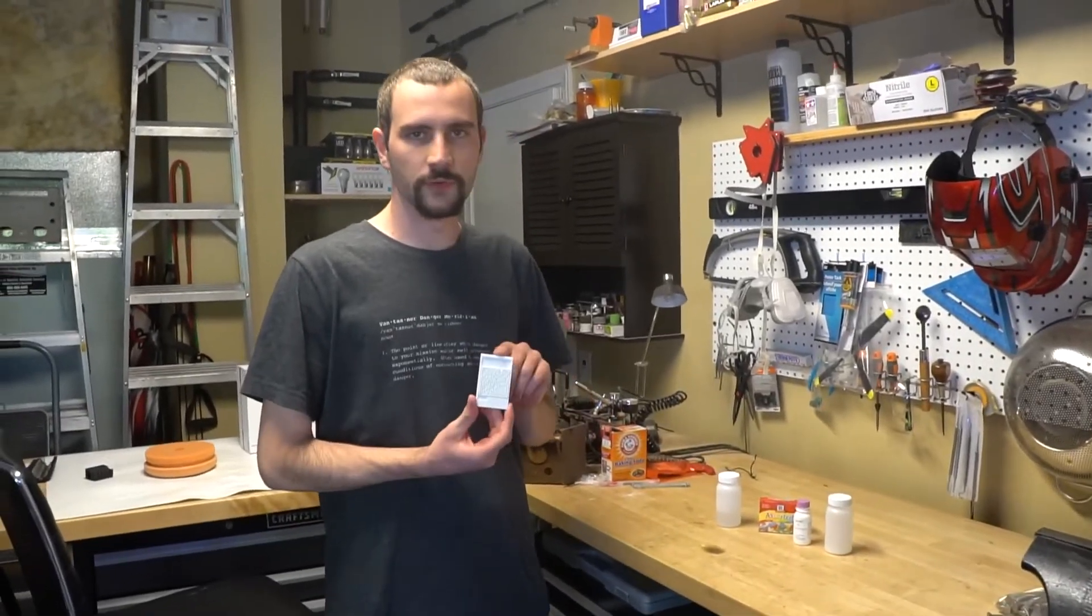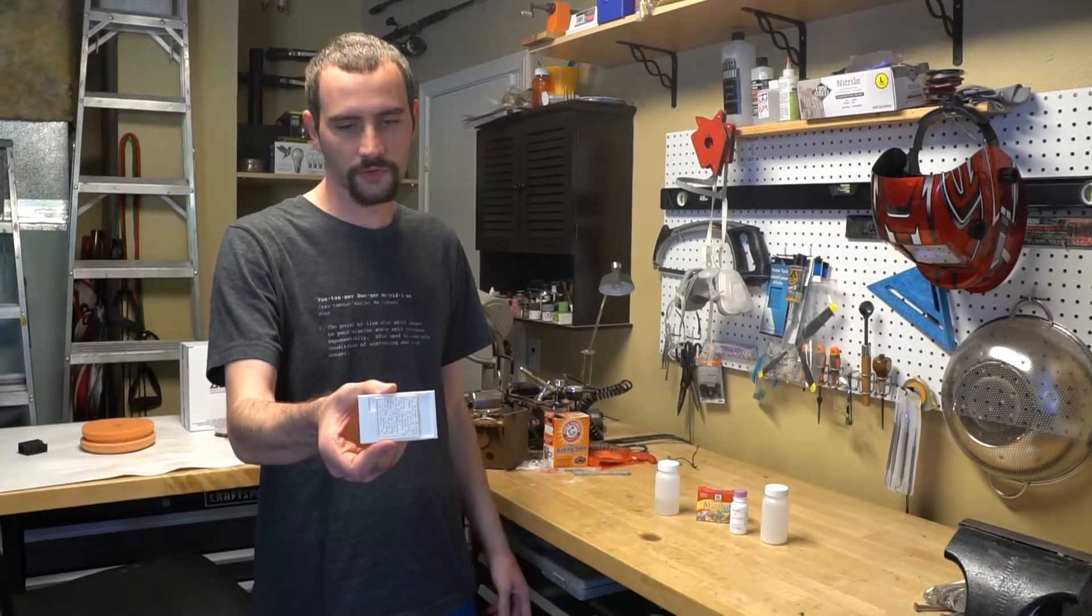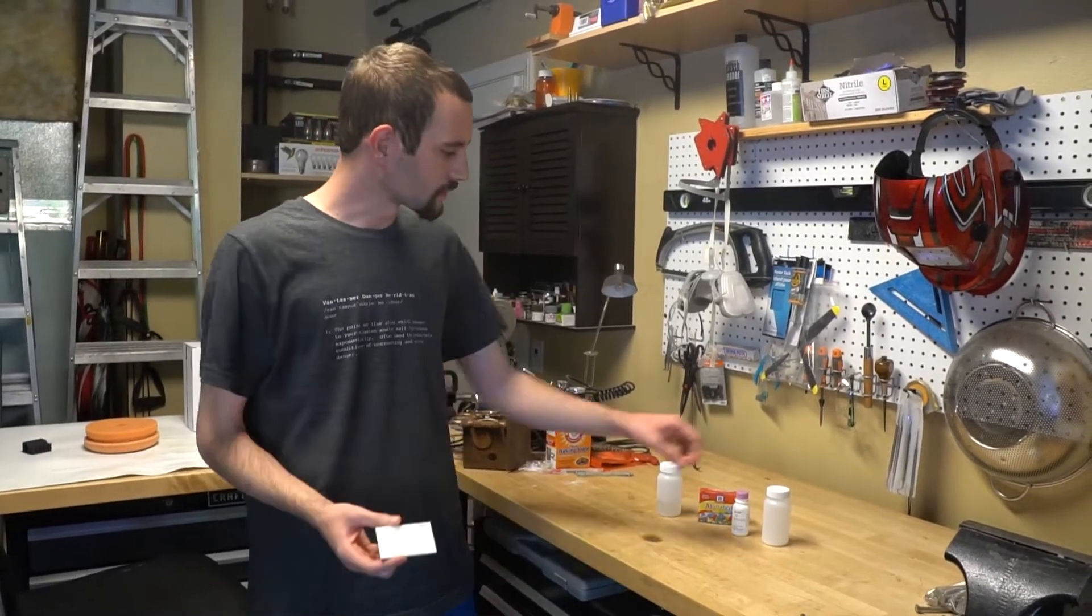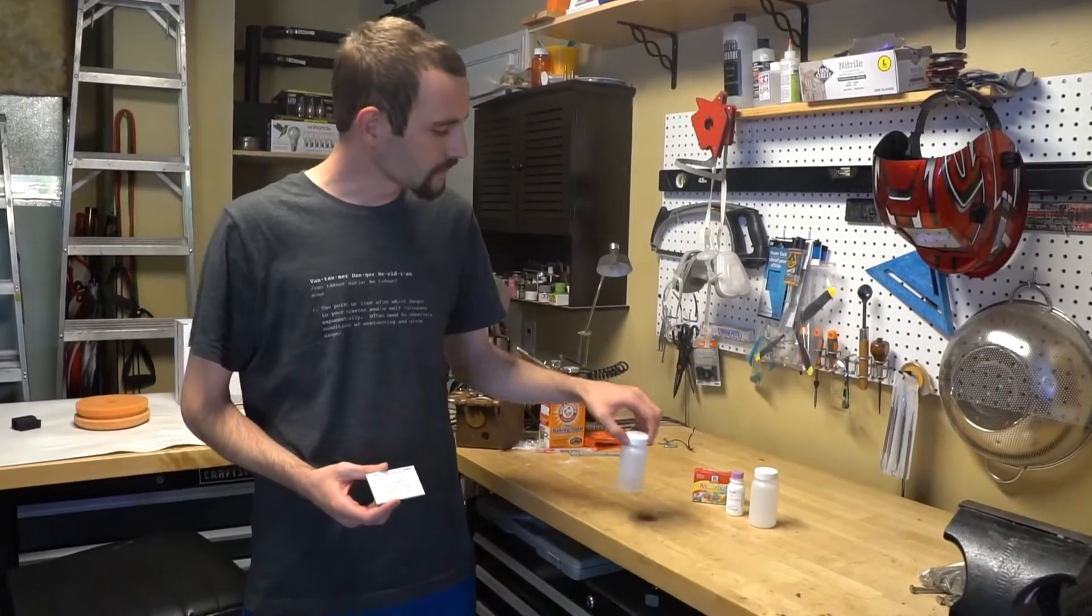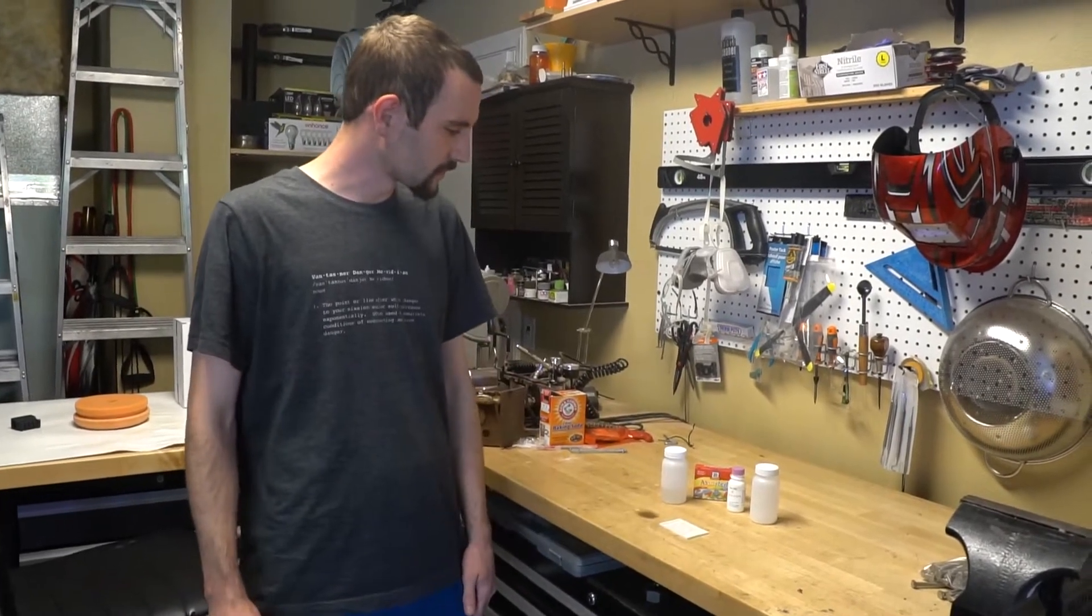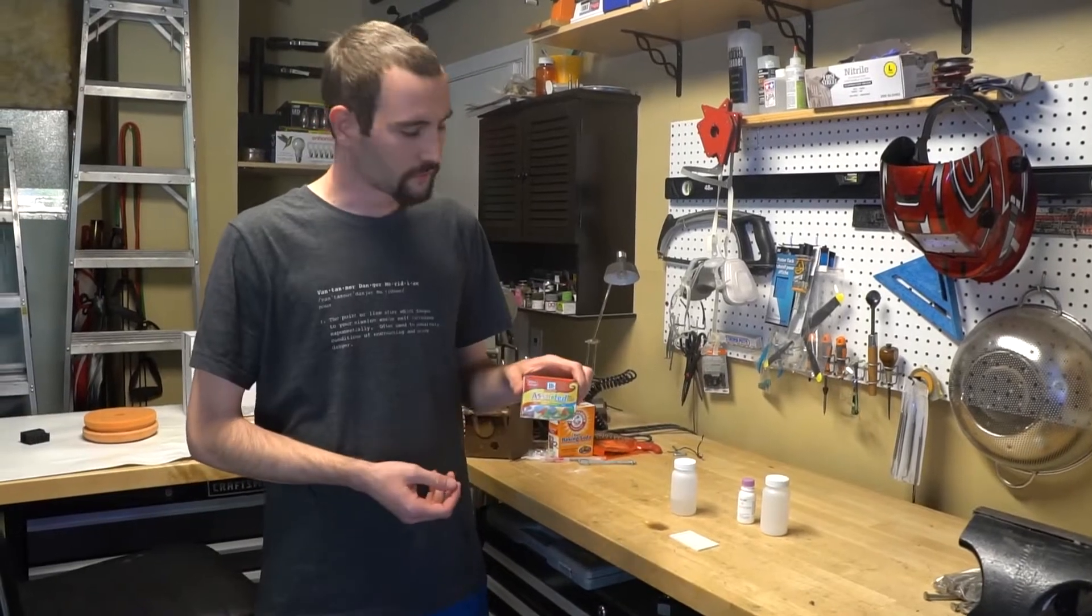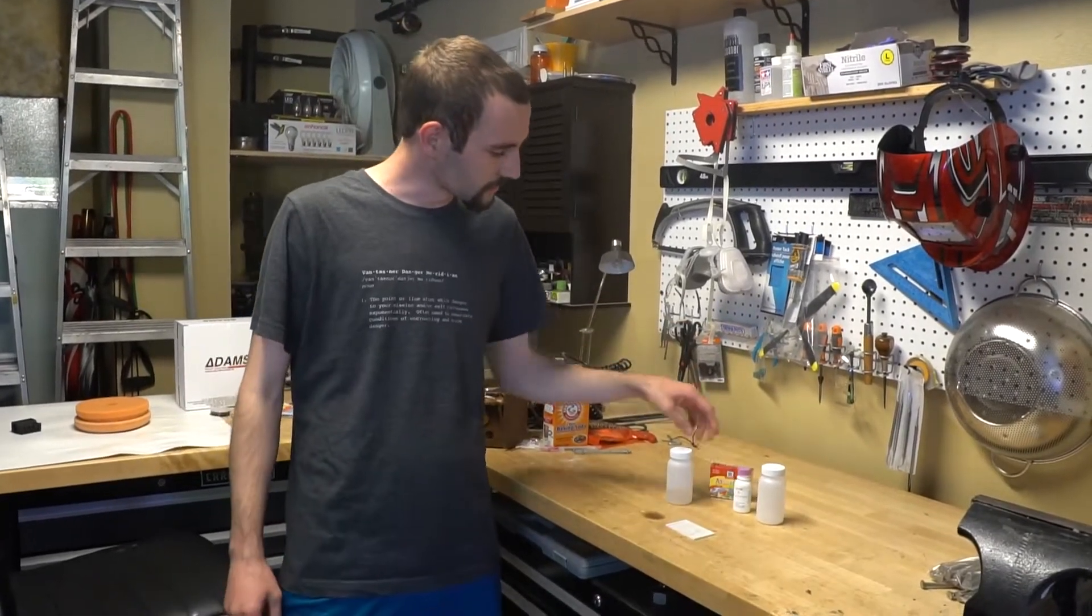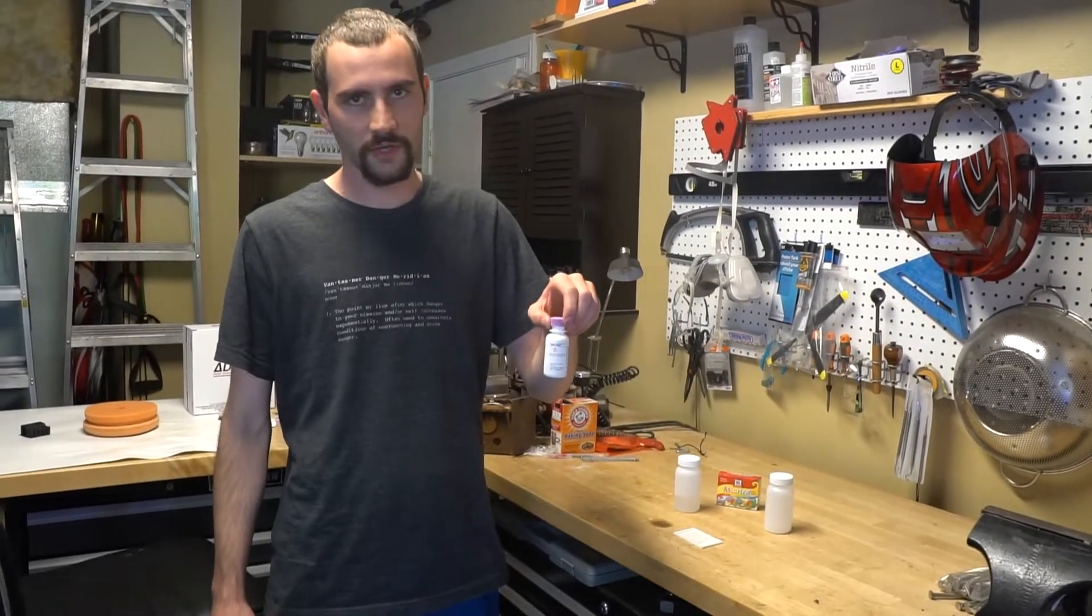So here's our 3D printed maze that we're going to be using for the experiment where it has reservoirs in it so you can put your sodium hydroxide and your hydrochloric acid in. The purpose of this experiment is basically to see whether or not we can solve a maze with food coloring using purely an acid-base reaction with the addition of oleic acid.